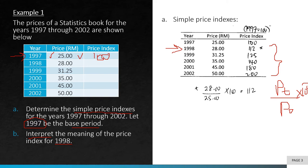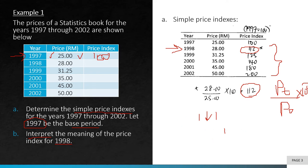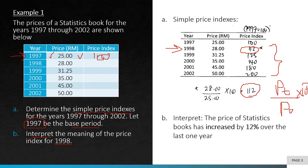For part B, interpret the price index for 1998. When interpreting, there are two things to address: the direction — whether it's above or below 100 — and the magnitude, meaning how much above or below. The index for 1998 is 112, which is above 100. Taking 112 minus 100 gives 12. Therefore, the price of statistics books has increased by 12% over the last one year.